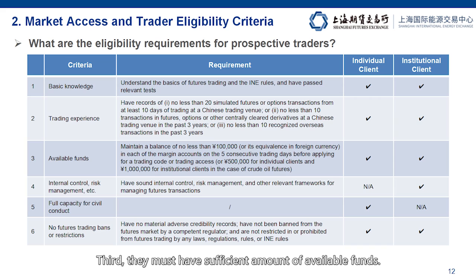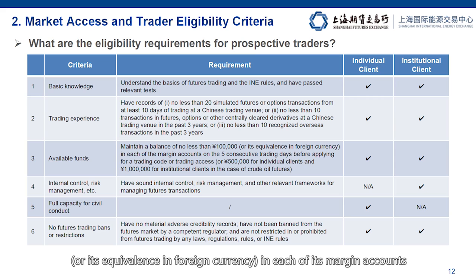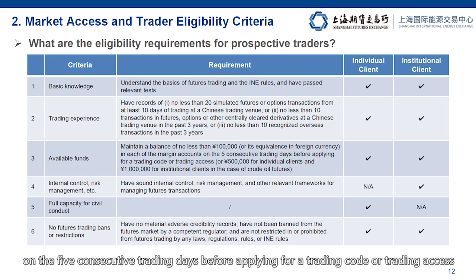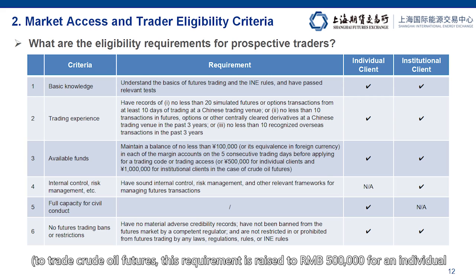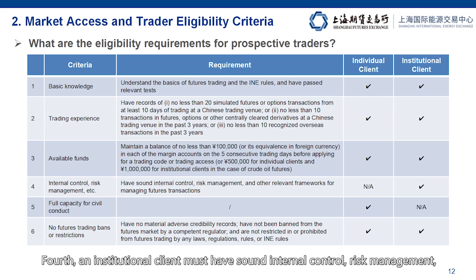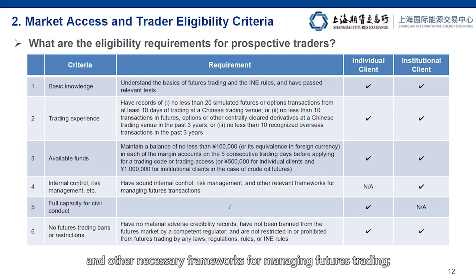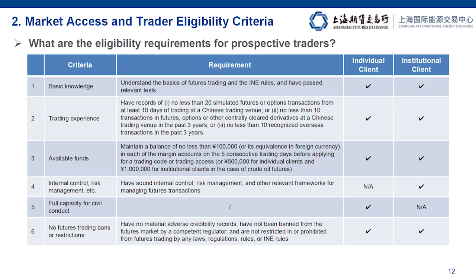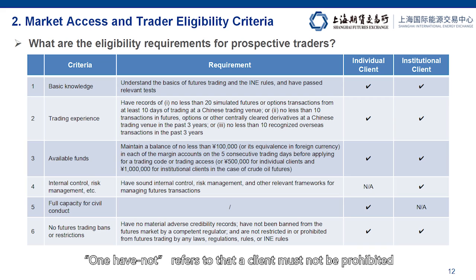Third, they must have sufficient available funds. Specifically, a client must maintain a minimum balance of RMB 100,000 or its equivalent in foreign currency in each of its margin accounts on five consecutive trading days before applying for a trading code or trading access. To trade crude oil futures, this requirement is raised to 500,000 yuan for an individual and 1 million yuan for an institution. Fourth, an institutional client must have sound internal control, risk management, and other necessary frameworks for managing futures trading. An individual client must have full civil capacity. So these are the four haves.